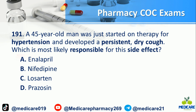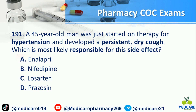Number 191: A 45-year-old man was just started on therapy for hypertension and developed a persistent dry cough. Which drug is most likely responsible for this side effect? A) Enalapril. B) Nifedipine. C) Losartan. D) Prazosin. The answer is A.